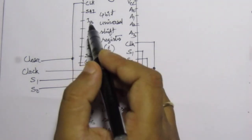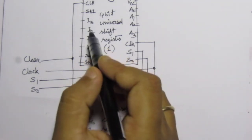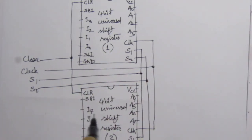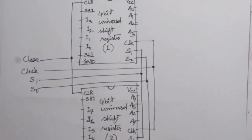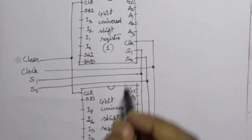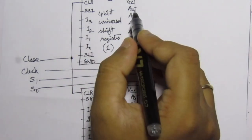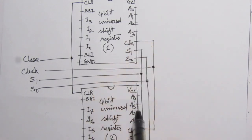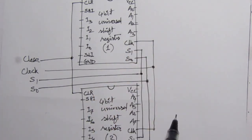The first IC provides 4-bit inputs I3, I2, I1, I0 and outputs A0 through A3. The second IC provides inputs I7, I6, I5, I4 and outputs A4 through A7. Combined, we have 8 parallel inputs and 8 parallel outputs, completing the block diagram of the 8-bit universal shift register.